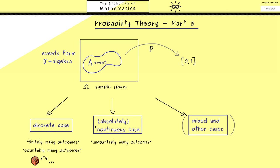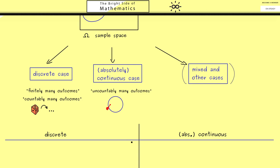On the other hand, in the absolutely continuous case we have infinitely many outcomes, but they are uncountable. The typical example would be a dartboard where you throw a dart. There, all the values in the disk are possible outcomes. That's the rough idea for the two special cases, so let's go into the details.